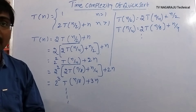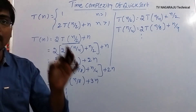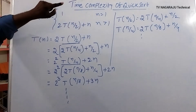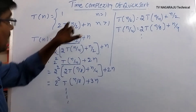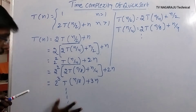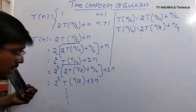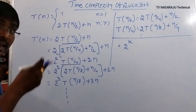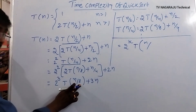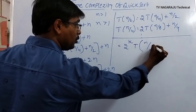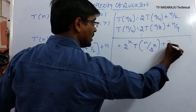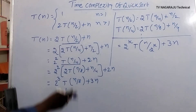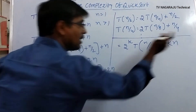This is a recursive, divide and conquer approach. Each recursion must have a base condition. The base condition here is when n equals 1. By repeating k number of times, we get the pattern: T(n) = 2^k · T(n/2^k) + k·n.